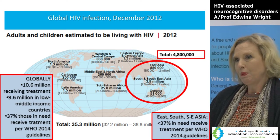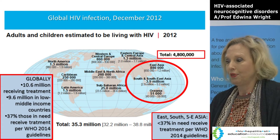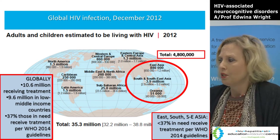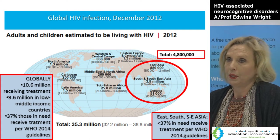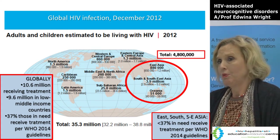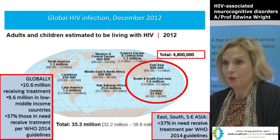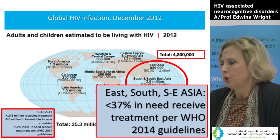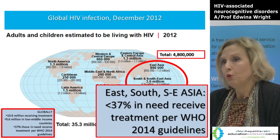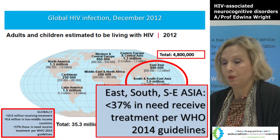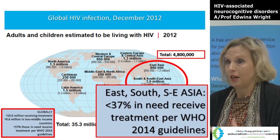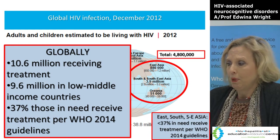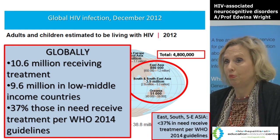To put this in perspective — although we identify with Europe and the US, we actually live in Asia and the Pacific region. Worldwide there are around 35 million people living with HIV, but in our region we have around 4.8 million. Looking at the proportion of people who should be on antiretroviral therapy according to current WHO guidelines, you can see only about 37% are actually receiving it. Globally, about 10 million people need therapy and only about a third are receiving it.